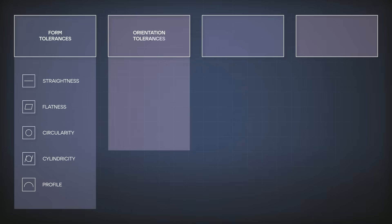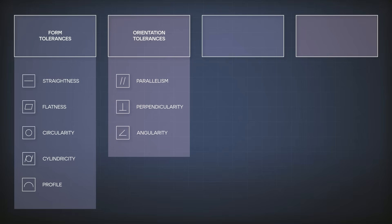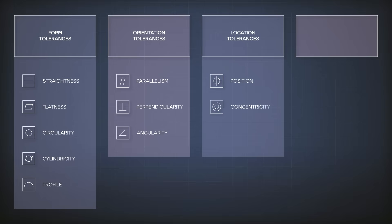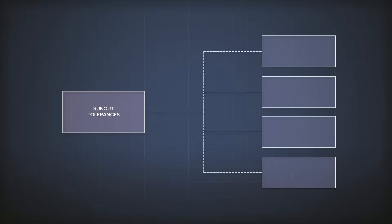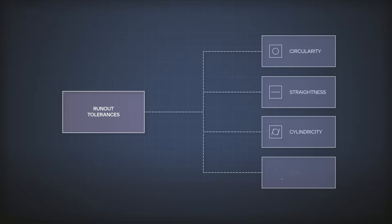Orientation tolerances, which include parallelism, perpendicularity, and angularity. Location tolerances, which include position, concentricity, and in some cases profile. Runout tolerances, which are mainly used to tolerate rotating elements — these are combined specifications that combine other specs like circularity, straightness, cylindricity, and concentricity in one tolerance.